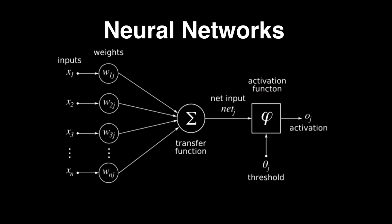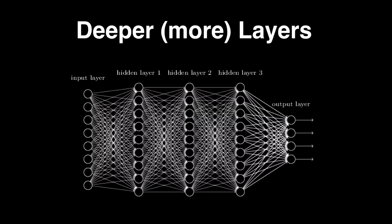A single neuron has upstream inputs with weights that adjust the influence of each connection, and an activation function which adds non-linearity. Without the activation function, a single neuron is nothing more than a regression model — which is linear. By adding an activation function to each neuron, you add non-linearity to the whole network.